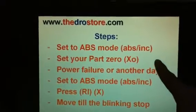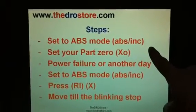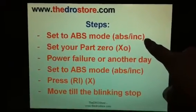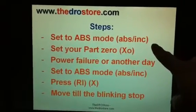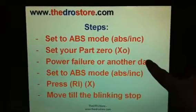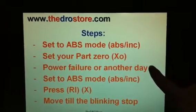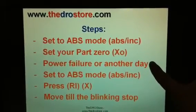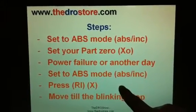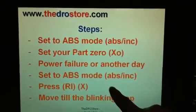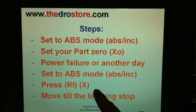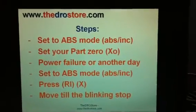The first two steps are to save the reference position of the part 0. First, you should go to absolute mode, set your part 0, and after that, if there is a power failure or you want to continue your job on another day, you have to go back to absolute mode, get to the RI function, choose the axis that you want to find the datum, and move until the blinking stops.